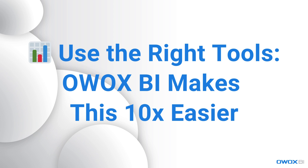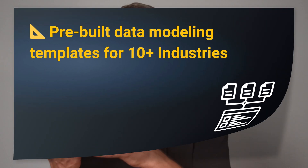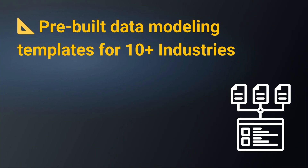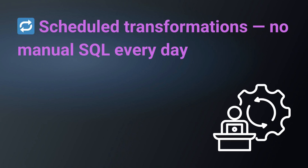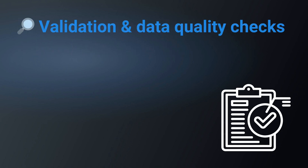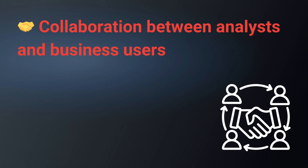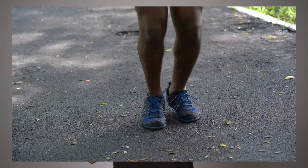And finally, use the right software tools. OvoxBI makes this 10x easier — building a Star Schema can be a technical job unless you use the right tools. OvoxBI gives you pre-built data modeling templates, a visual interface to define dimensions, relationships, and hierarchies, scheduled transformations so you don't need to run manual SQL every day, validation and data quality checks, and collaboration between analysts and business users. The best part? You can try it out right now and skip over 90% of the manual setup. The link is in the description below.